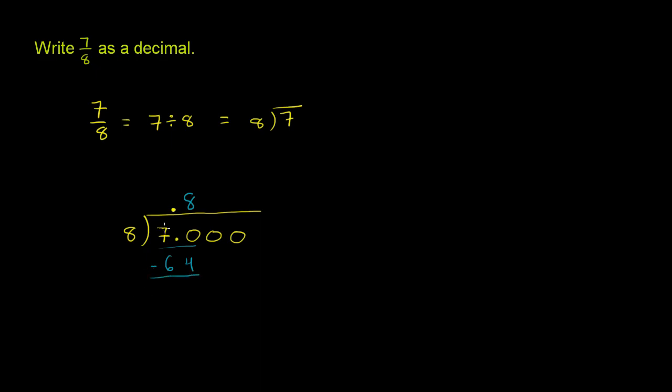And then you subtract. 70 minus 64 is 6, and then bring down another 0, because we still have a remainder. We want to get to the point that we have no remainders, assuming that this thing doesn't repeat forever.